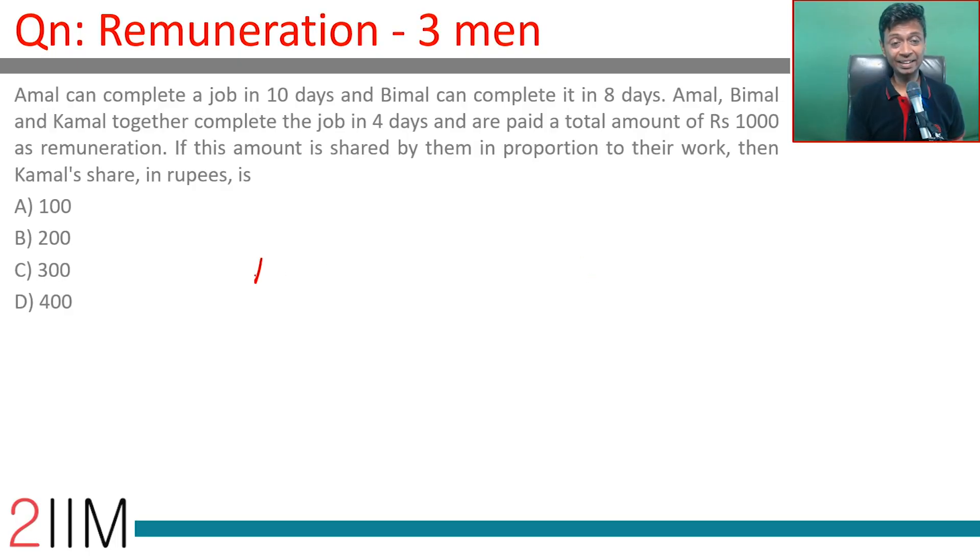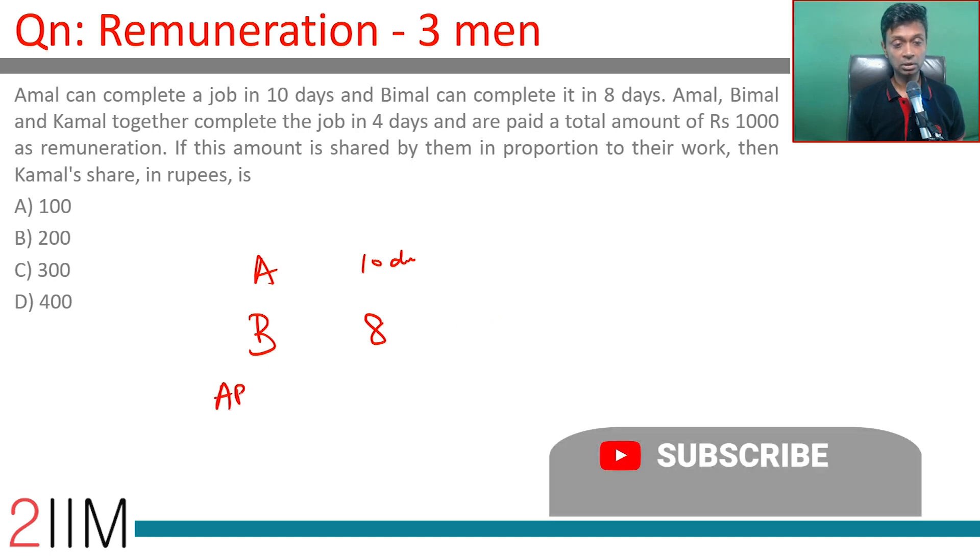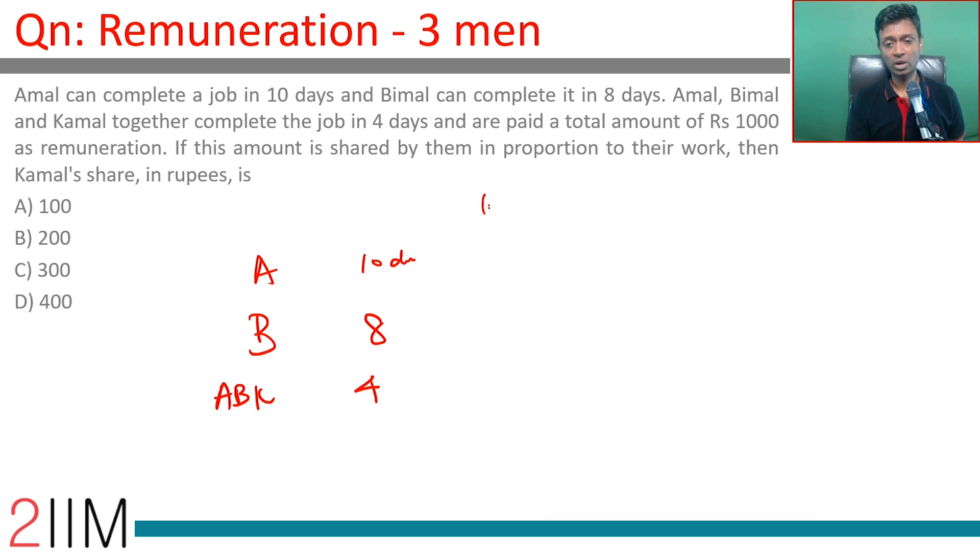Amal can complete a job in 10 days. Bimal can complete it in 8 days. Amal, Bimal, and Kamal together complete the job in 4 days. In one day, Amal can do 1 by 10, Bimal can do 1 by 8.